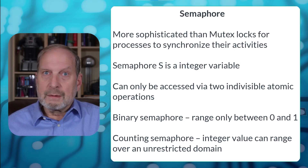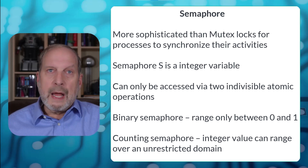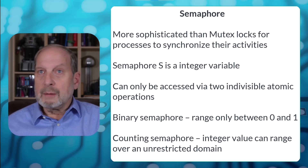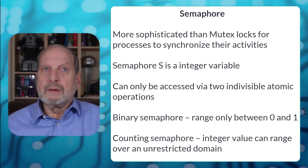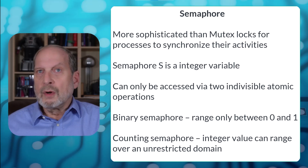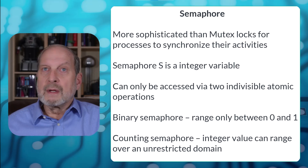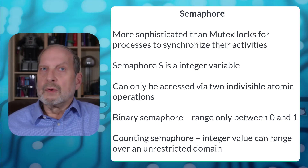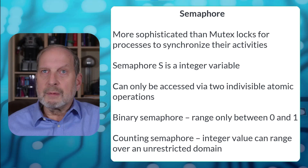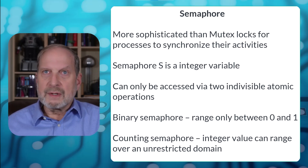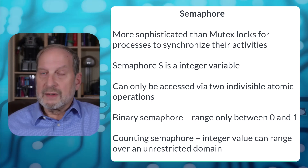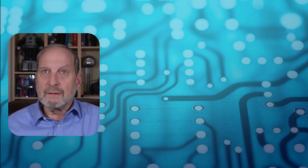Another tool available to us is the semaphore. Semaphores can be configured like a mutex lock, with either it's available or it's not in a binary configuration, or there are counting semaphores with an integer that can count down with resources. So say there are five resources available — as processes come and ask for those resources, they can count down and then tell the sixth process that there's nothing available.